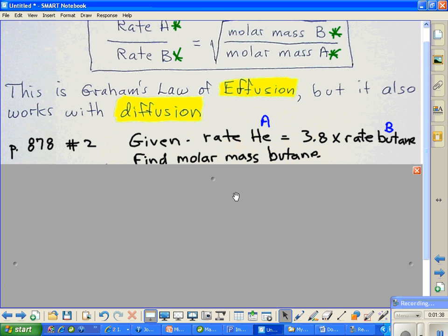Now we're supposed to find the molar mass of butane given those relative rates. Looking on the periodic table, we can get the rest of our information. We're going to have the rate of A, the rate of B, and the molar mass of A from the periodic chart. So we have three of the four variables, and this guy right here is the only variable that we don't have.